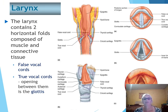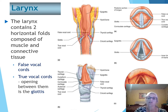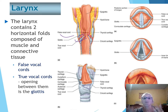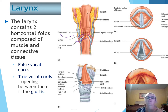The larynx has two horizontal folds made of muscle and connective tissue: the false vocal cords and the true vocal cords. The opening between those vocal cords is called the glottis. The upper folds are the false vocal cords — they do not produce any sound. The lower folds are the true vocal cords, made of elastic fibers, and they produce sound whenever air is forced between the folds, causing vibrations.